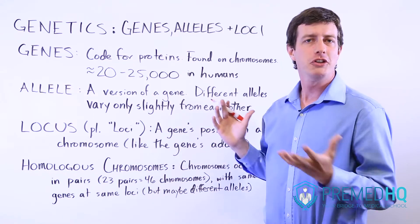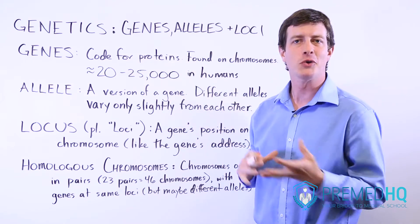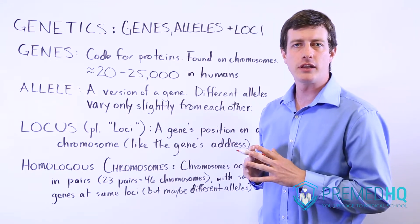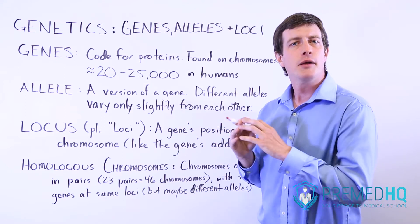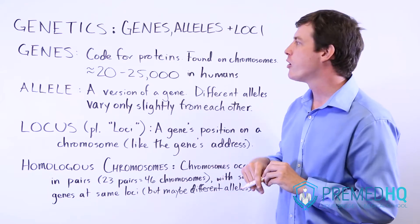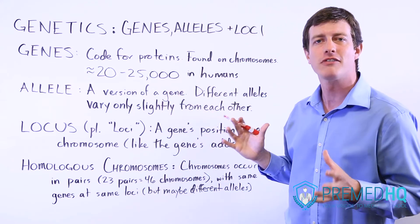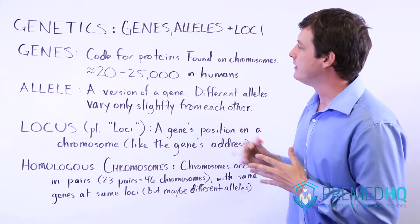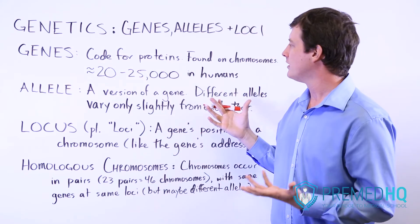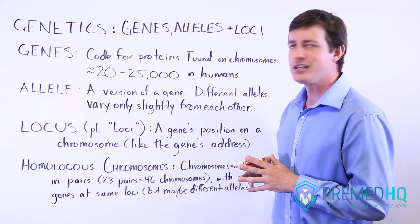A gene is a location on a chromosome that encodes for a particular protein or set of proteins that then relate to different traits. For example, if you're dealing with a flower, you could have a petal color gene and a stem length gene. They encode for different traits, and in humans this number keeps shrinking. We used to think it was hundreds of thousands if not more, and now it's down to 20,000 to 25,000 different genes in the human genome, and that could be decreasing as we continue to find out more.